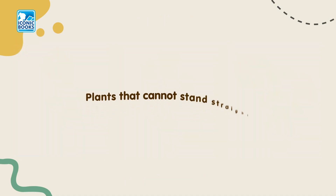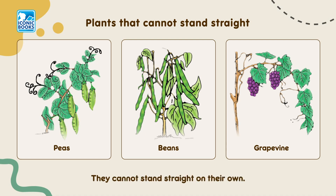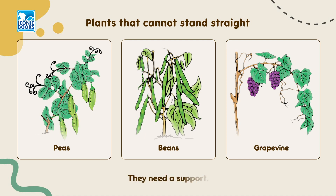Some plants are weak. They cannot stand straight on their own. They need a support. They are called climbers.